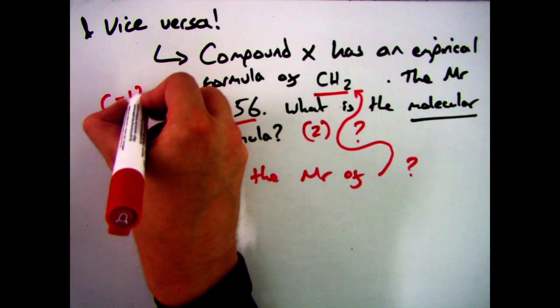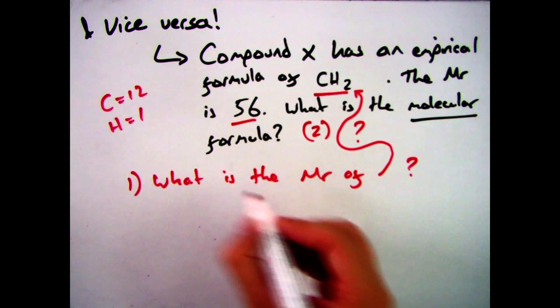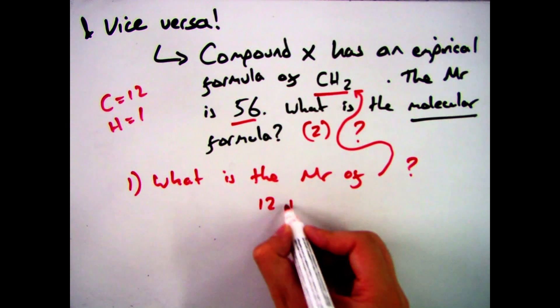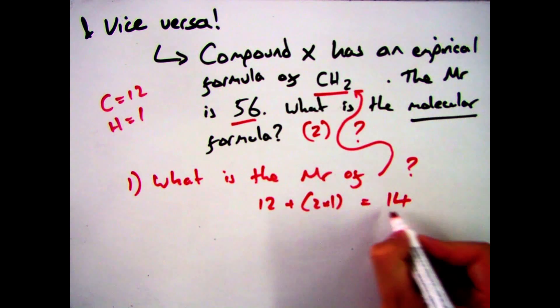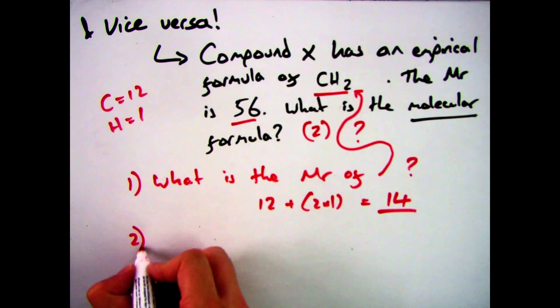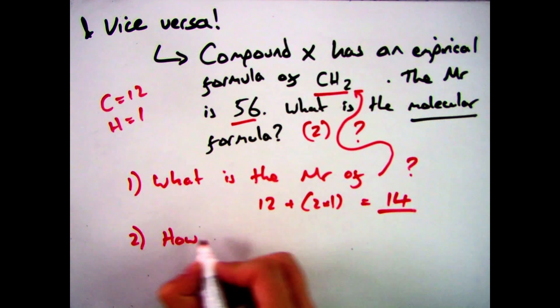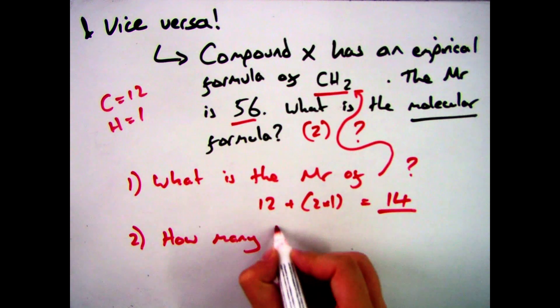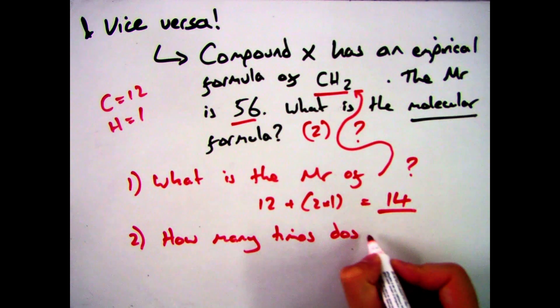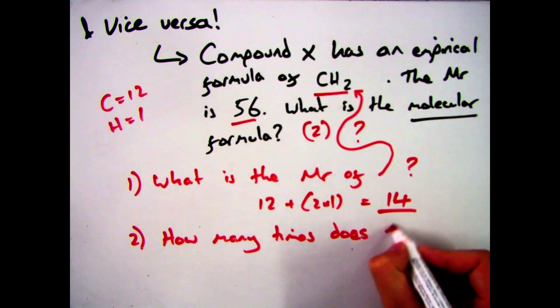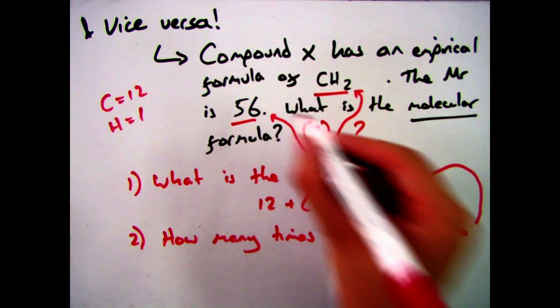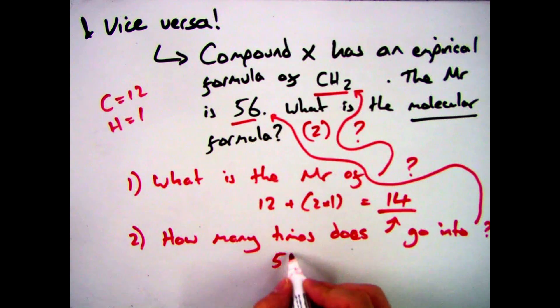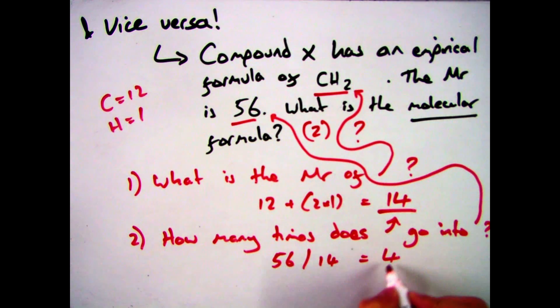You'll be given the atomic masses, which of the carbon is 12 and hydrogen is 1. And therefore, you have 12 carbons and 2 times 1 is 2 hydrogen, which gives me 14 overall. The second step is, how many times does that 14 fit into our MR for the molecule? So 56 divided by 14, which gives me 4.